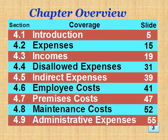Chapter 4 Overview. Section 4.1 Incomes is on slide 5. Section 4.2 Expenses is on slide 15. Section 4.3 Direct Expenses is on slide 19. Section 4.4 Disallowed Expenses is on slide 31. Section 4.5 Indirect Expenses is on slide 39. Section 4.6 Employee Costs is on slide 41. Section 4.7 Premises Costs is on slide 47. Section 4.8 Maintenance Costs is on slide 52. Section 4.9 Administrative Expenses is on slide 55.